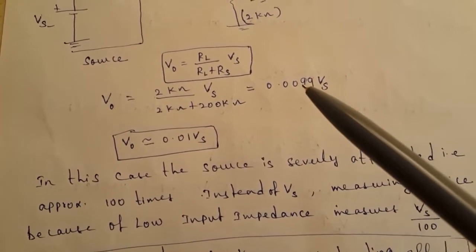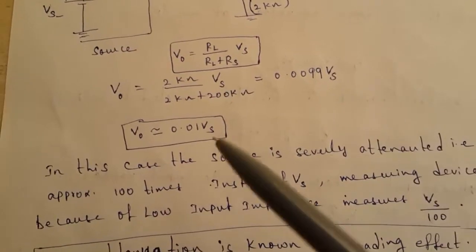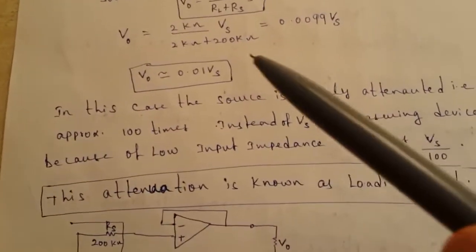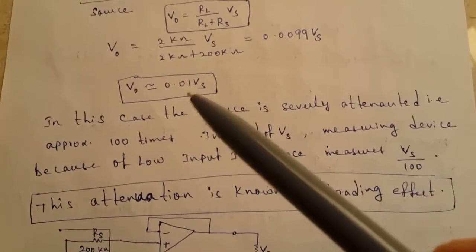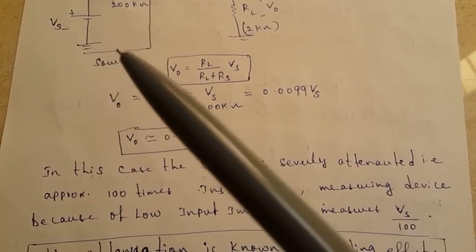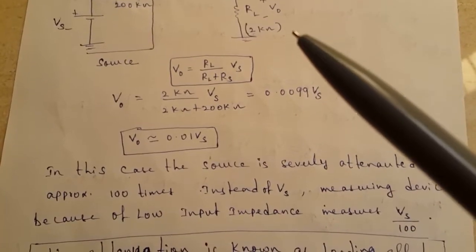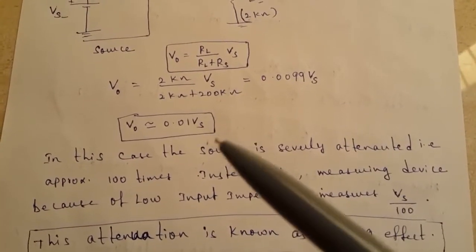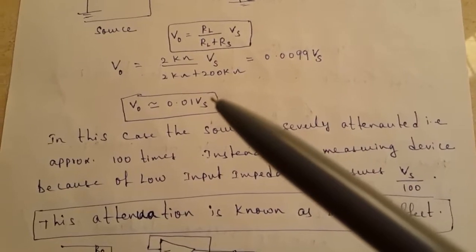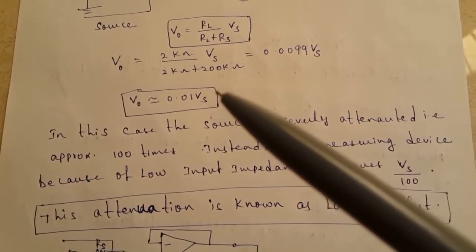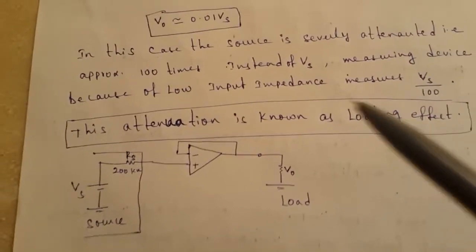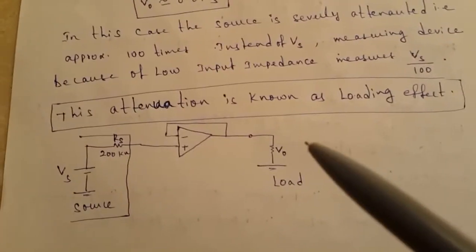We get V_out = (2 kΩ / (2 kΩ + 200 kΩ)) × VS = 0.0099 VS, approximately 0.01 VS. The source is highly attenuated — the measuring device sees only 1/100 of VS. This attenuation is known as the loading effect.